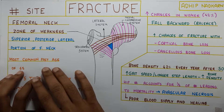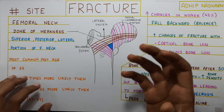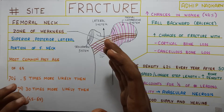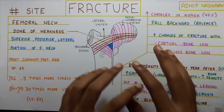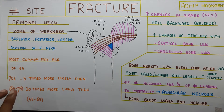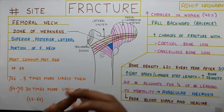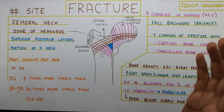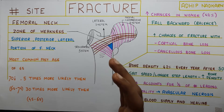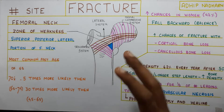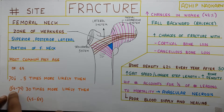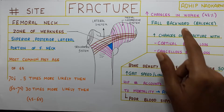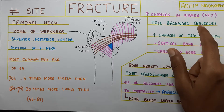The most common age for femoral neck fracture is past 65, and the chances are very high — up to 42% in women. In your 70s, you are 5 times more likely to have a fracture compared to the 65 to 74 age gap. And within the 65 to 74 age range, you are 30 times more likely to have a fracture than in the 45 to 65 age gap. At higher age, this fracture often occurs due to a backward fall caused by balance issues.